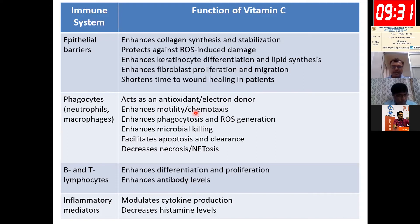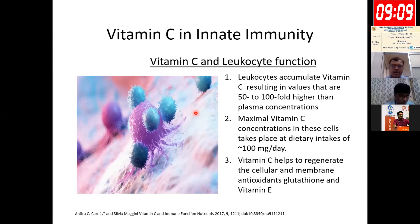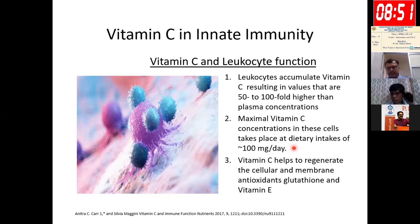Leukocytes accumulate vitamin C to a much higher extent compared to serum — perhaps 50 to 100-fold higher. As dietary intake increases to around 100 mg per day, the concentration of vitamin C in leukocytes increases. According to ICMR dietary requirements, vitamin C is around 40 mg per day, but in pregnant ladies it is around 60 mg per day, in lactating mothers around 80 mg per day, and in infants around 25 mg per day. Vitamin C also helps regenerate cellular and membrane antioxidants like glutathione and vitamin E — vitamin E regeneration is actually dependent upon vitamin C.